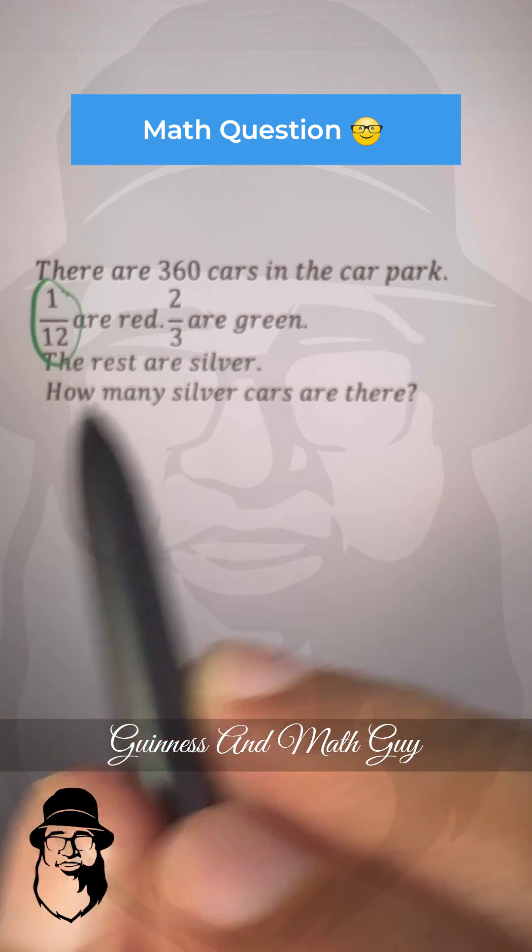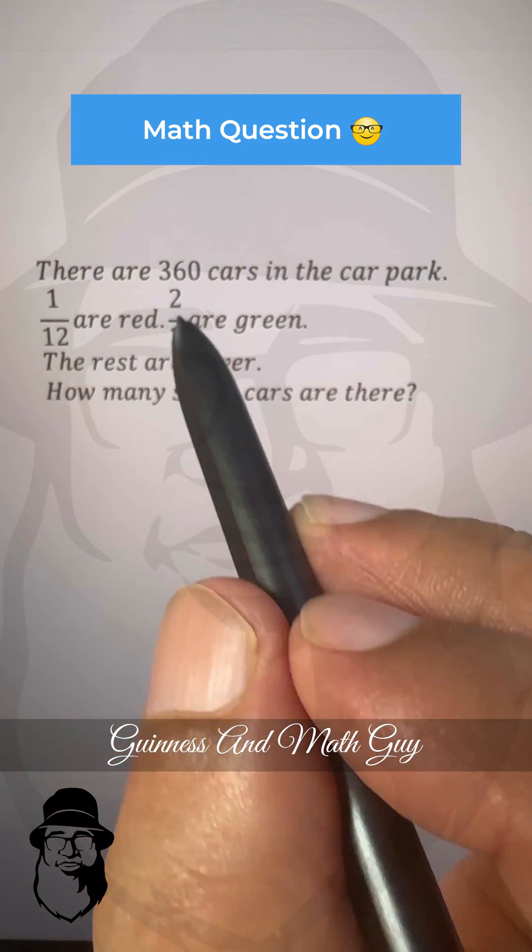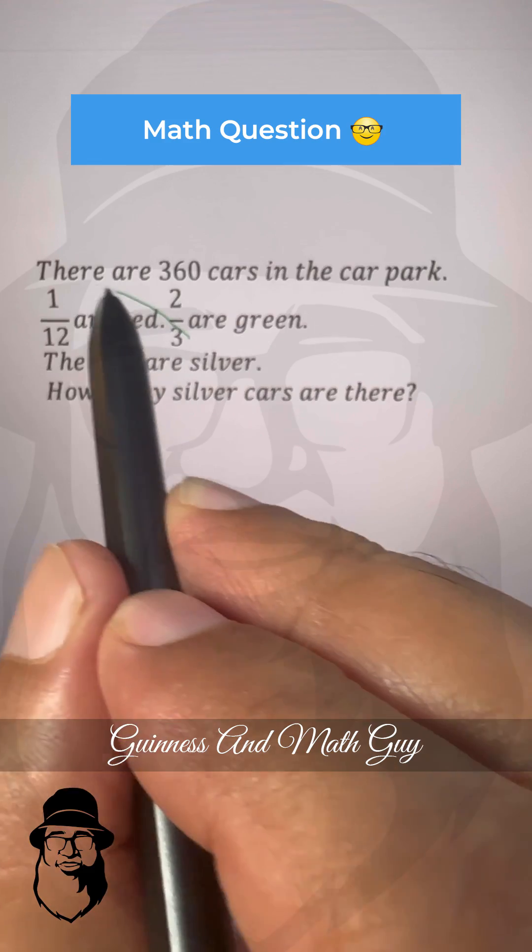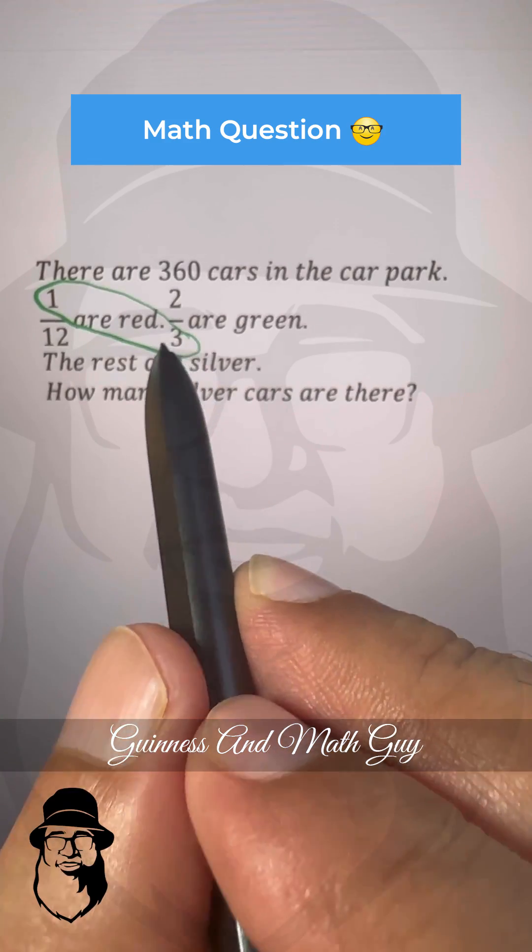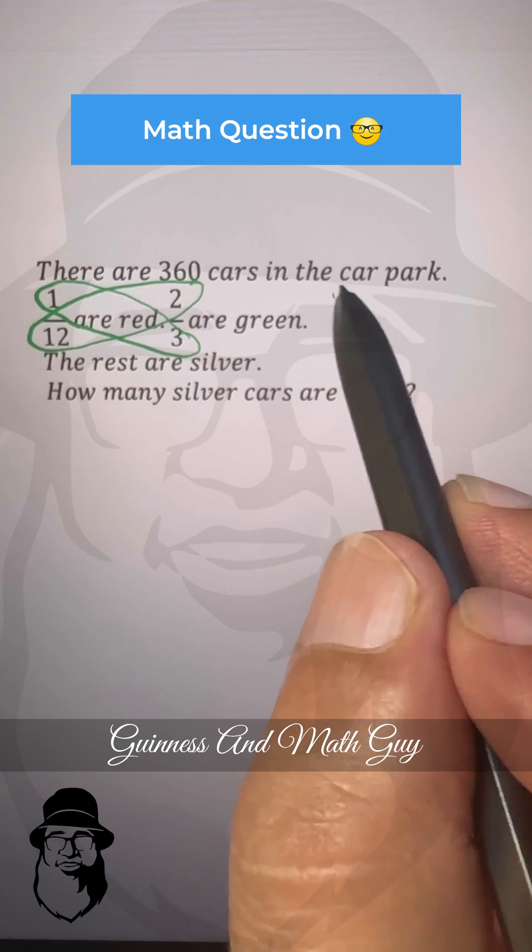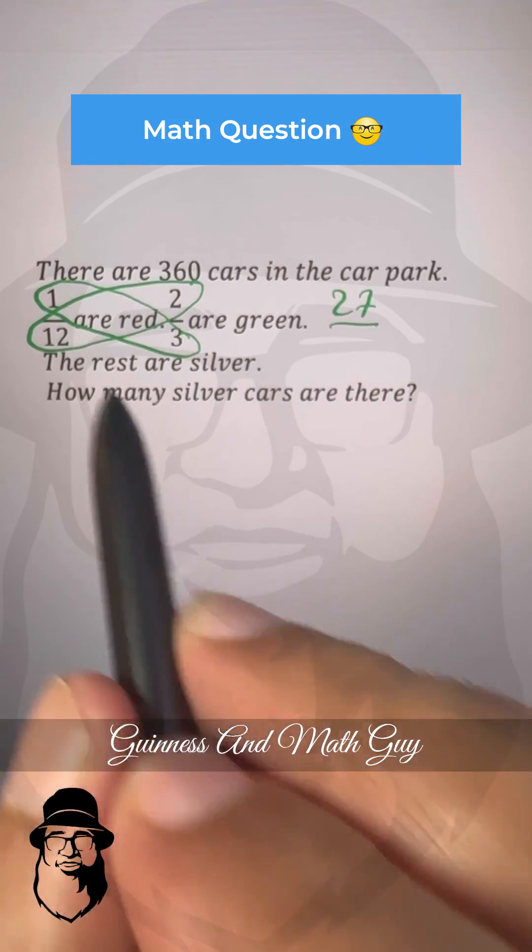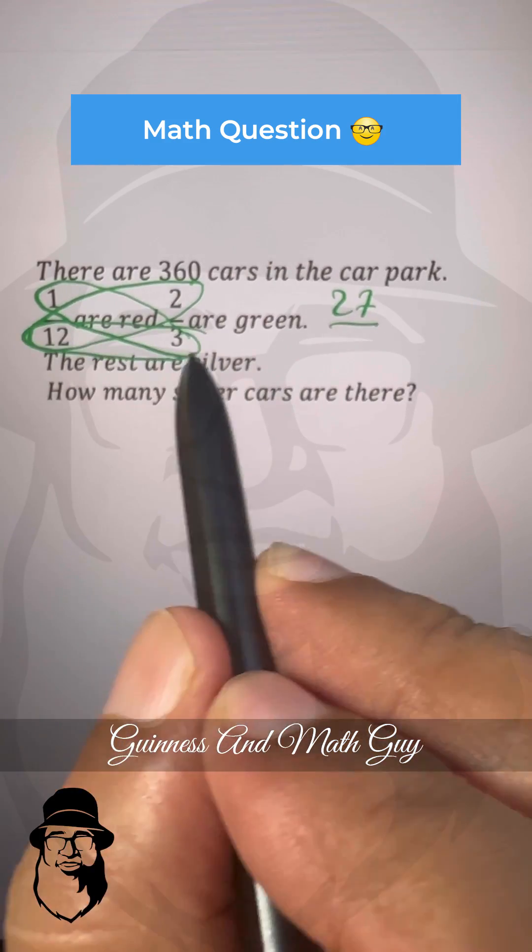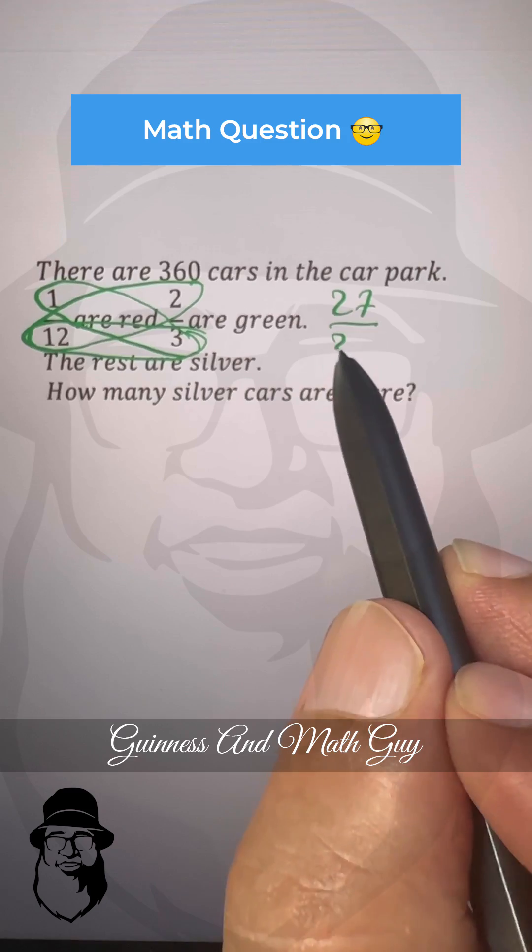So 1 over 12 are red and 2 over 3 are green. Let's add these two fractions. 1 times 3 is 3 and 2 times 12 is 24. 3 plus 24 is 27, and 3 times 12 is 36.